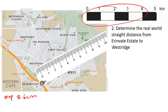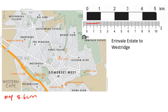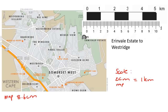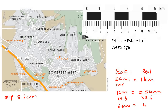Now we need to go look at our bar scale. We can see that 2 centimeters is the same as 1 kilometer. So our scale is: 2 centimeters on the map equals 1 kilometer in real life. Getting that to 1 centimeter: 1 centimeter will be 0.5 kilometers. Now we have 8.6 centimeters, so we multiply 0.5 by 8.6, which gives us 4.3 kilometers. So the length from Westridge to Erinville is 4.3 kilometers.